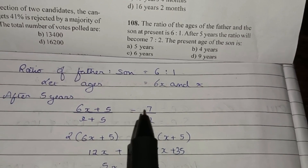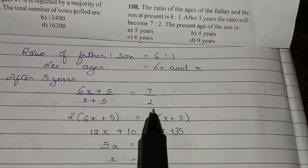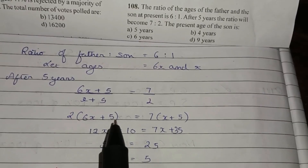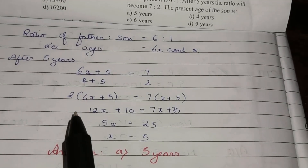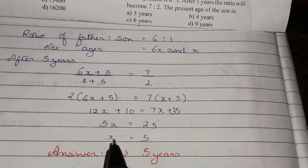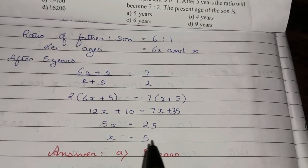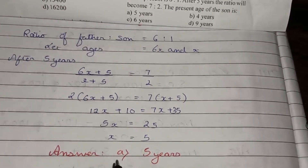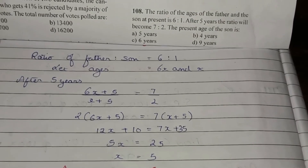Cross multiplying: 2(6x plus 5) equals 7(x plus 5). Simplifying this gives x equals 5. Hence the son's present age is 5 years, which is option A, the correct answer.